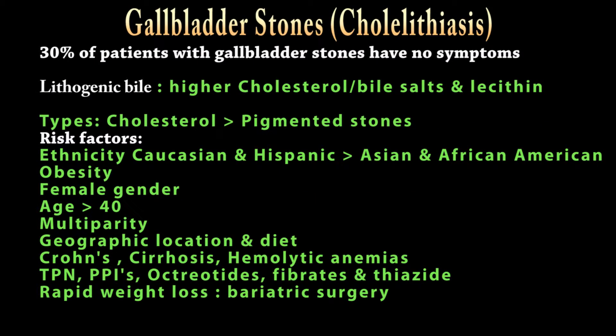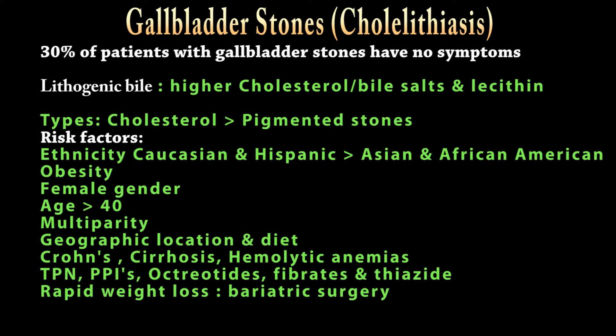Gallbladder stones, or cholelithiasis, is asymptomatic in 30% of patients. The tendency for an individual to form stones depends on the chemical composition of the bile. Risk factors include ethnicity, obesity, female gender, age more than 40, multiple pregnancies, geographic location and diet, disease conditions such as Crohn's disease, liver cirrhosis, hemolytic anemias, medications such as proton pump inhibitors and octreotides, and rapid weight loss as seen in bariatric surgery.